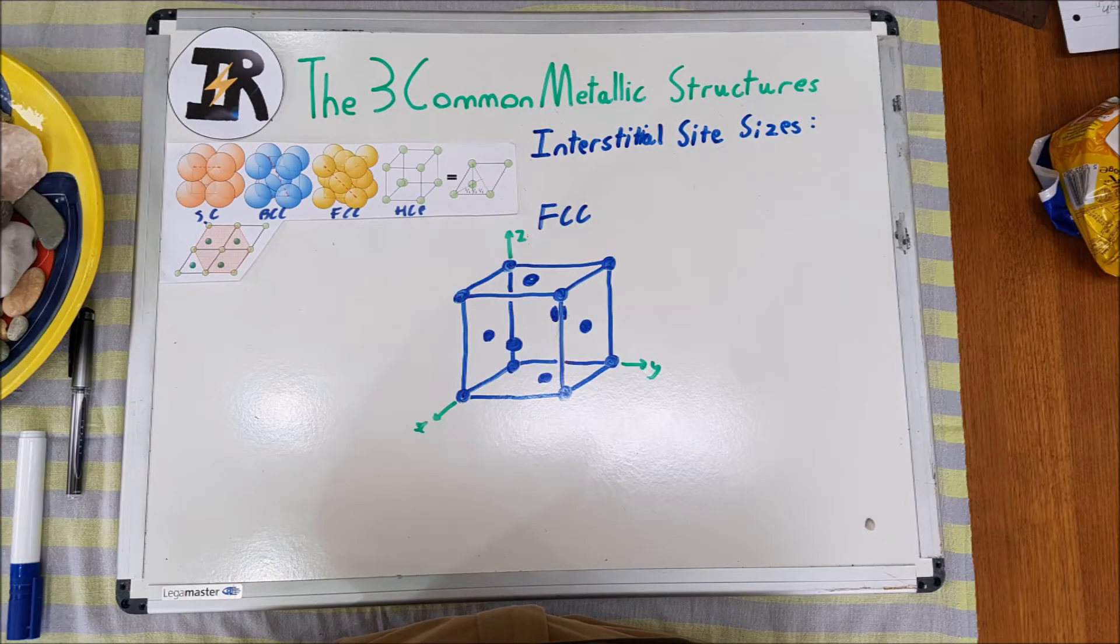On the whiteboard is the reduced sphere model of the FCC crystal structure, with the axes x, y, and z shown. In the non-reduced sphere model, it's easier to see that there are various spaces in the structure which aren't taken up by the volume of an atom. In the previous video, we calculated how much space was occupied in the unit cell by the volume of its constituent atoms. Here in this video, we are interested in the maximum sizes of the atoms that can fit into the various interstitial sites without inducing a strain on the surrounding matrix.